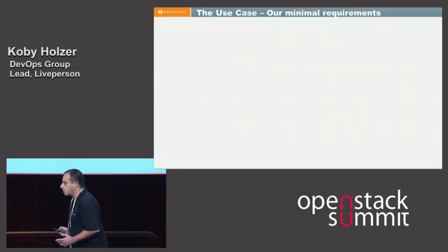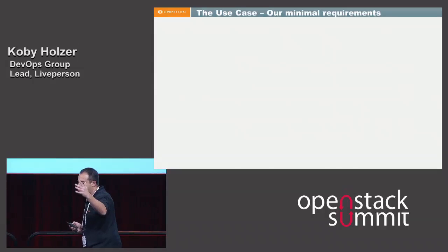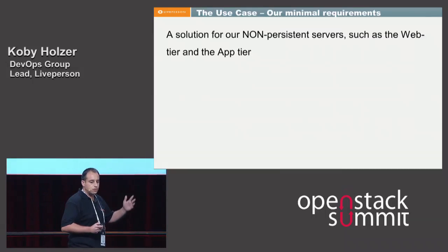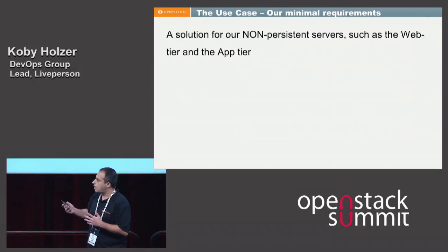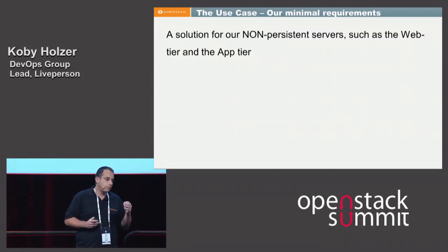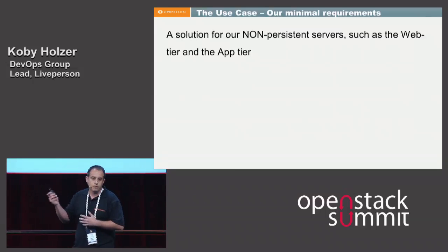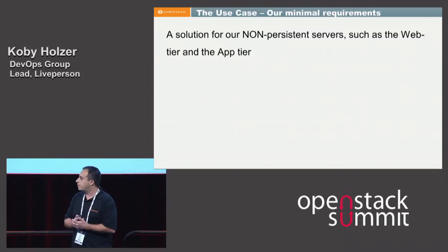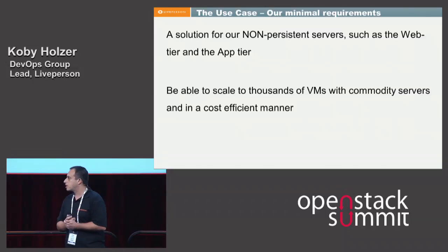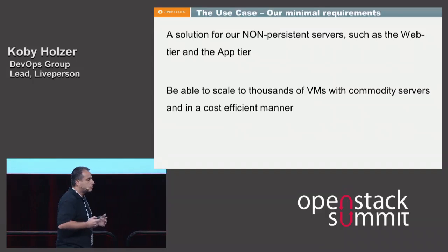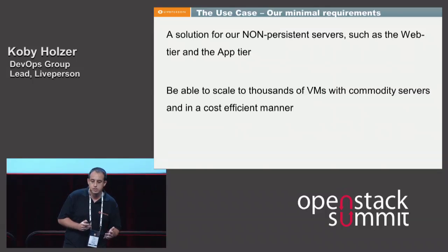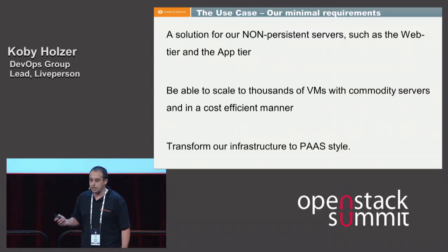Our use case. When we started this journey a year and a half ago, we knew we wanted to go as virtualized as possible, so we had minimal requirements. The first was to find a solution for our non-persistent servers, such as the web tier and the app tier. By non-persistent I mean those instances don't need to hold any data — they can go down and we can bring another one up. The second requirement was to scale to thousands of VMs with commodity servers, reusing the physical servers we already had. And the last requirement was to transform our infrastructure to a platform-as-a-service style.